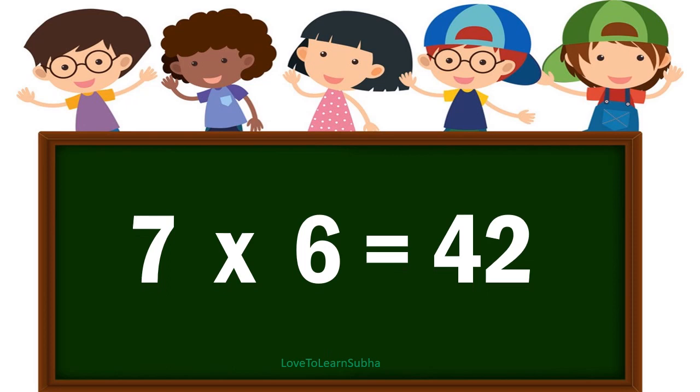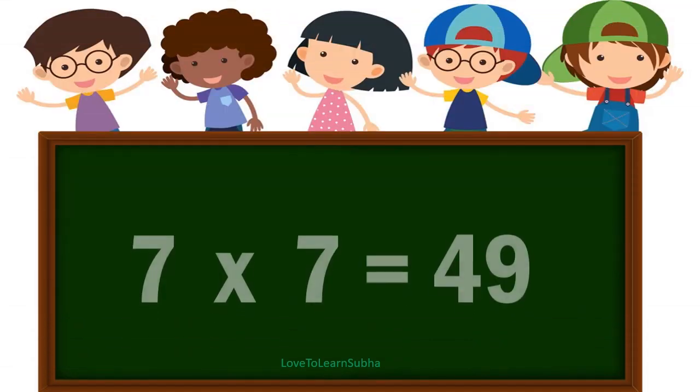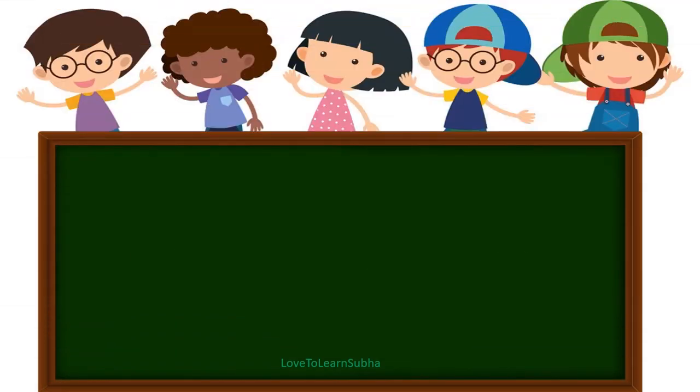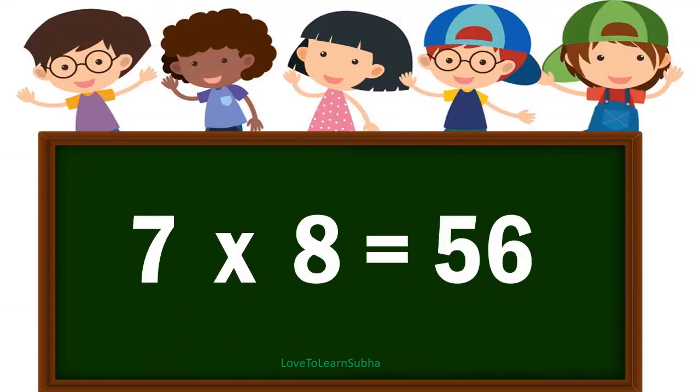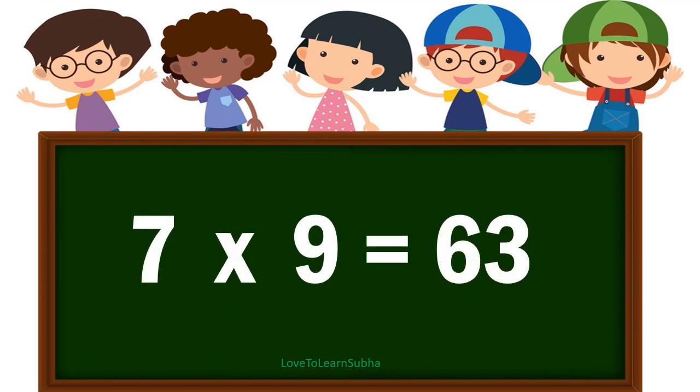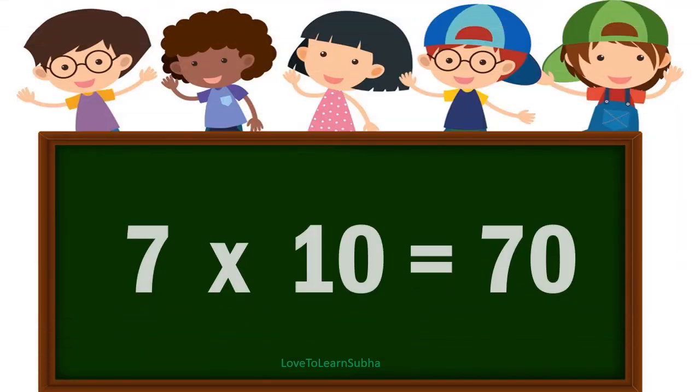7 6s are 42. 7 7s are 49. 7 8s are 56. 7 9s are 63. 7 10s are 70.